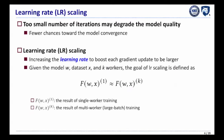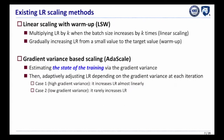Given the model W, dataset X, and K workers, the goal of learning rate scaling can be formulated as follows. There are two widely used learning rate scaling methods: LSW and AdaScale. LSW is a fixed learning rate scaling method — it multiplies the learning rate by K when the batch size increases by K times.